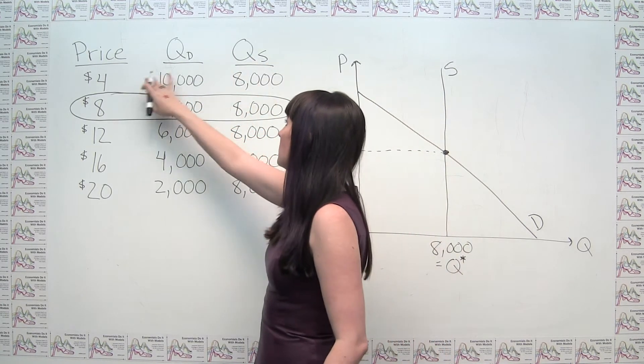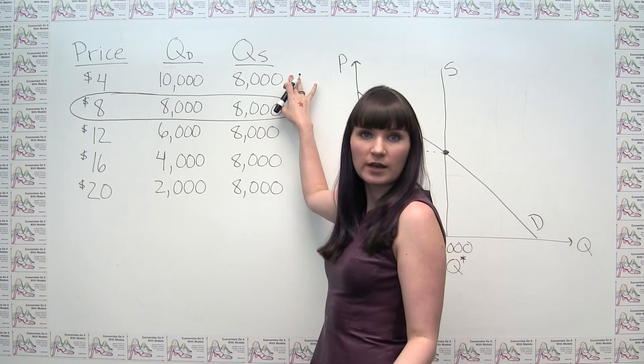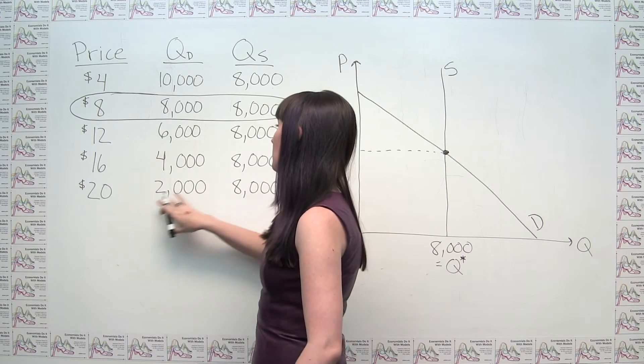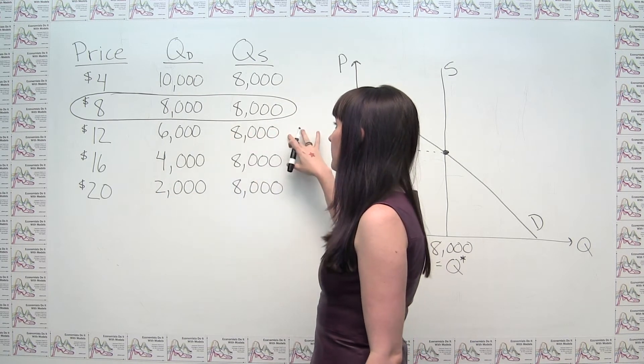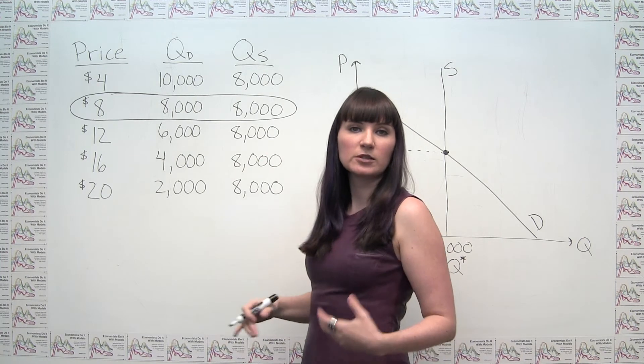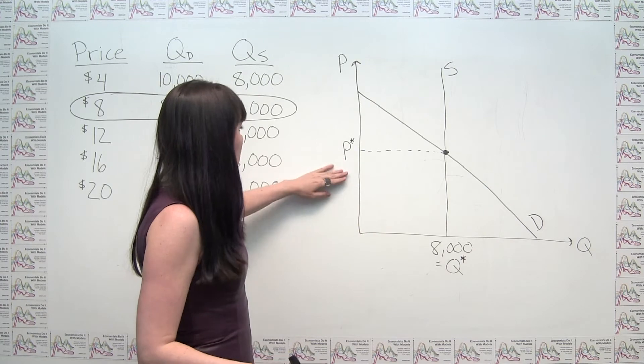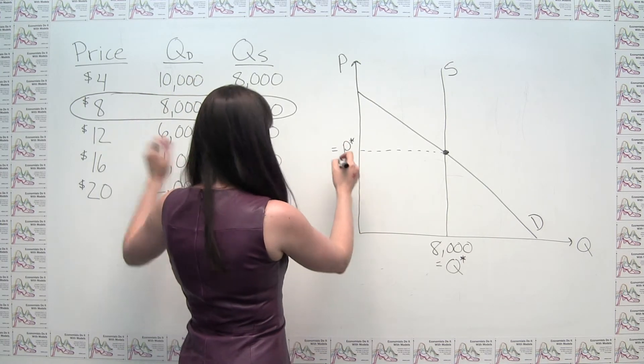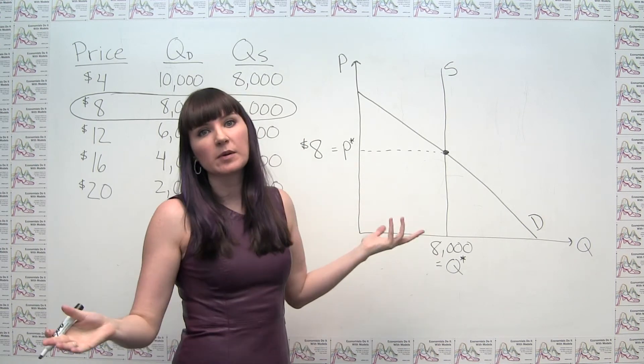So we can see here that this is where quantity demanded equals quantity supplied. At prices lower than that, our quantity demanded is greater than quantity supplied, so we'd have a shortage in economic terms. And at prices higher than the equilibrium price, our quantity demanded is going to be less than the quantity supplied, and in economic terms we're going to have a surplus. So we can say here that this equilibrium price has to be, in fact, $8. Pretty cheap basketball tickets you've asked me.